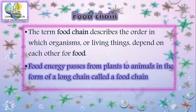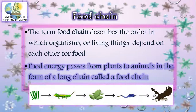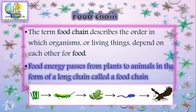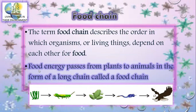Food chain — a very important concept. Food energy passes from plants to animals in the form of a long chain called a food chain. Photosynthesis in green plants changes the sun's energy to energy stored in food. Energy flows from sun to plants — the producers — and then to consumers, from plant-eating animals to flesh-eating animals. This energy flow forms a food chain.